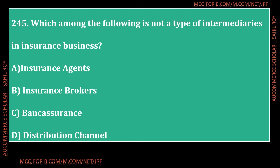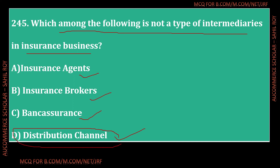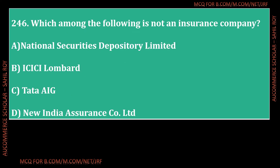Question number 245: Which among the following is not a type of intermediary in insurance business? Options: Insurance Agents, Insurance Brokers, Bank Assurance, or Distribution Channel. The correct answer is Option D - Distribution Channel. Intermediaries operate between insurer and insured; agents, brokers, and banks (bancassurance) are all intermediaries, but distribution channel is not a recognized type.